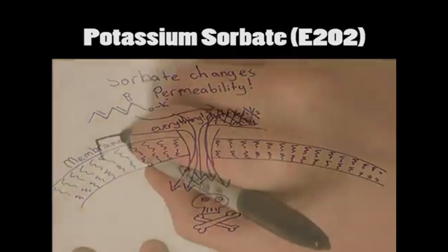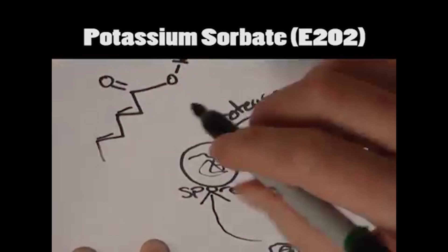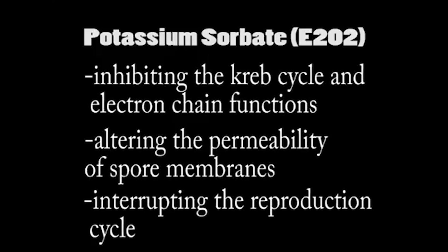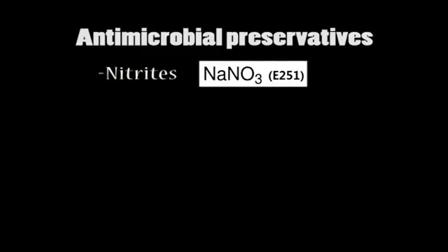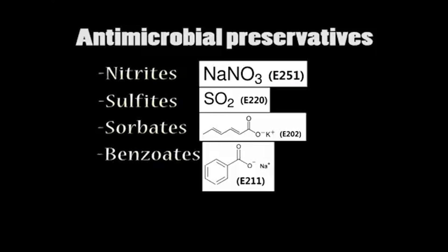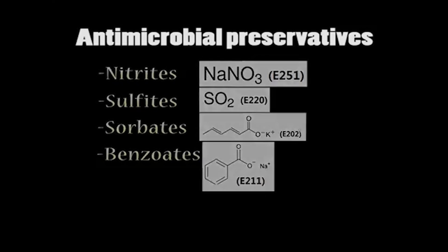In addition, sorbate inhibits protease enzymes which are essential for the spore's germination. These mechanisms in turn cease the growth of moulds, yeast and bacteria. Although this is just one antimicrobial preservative, there are a variety of preservatives that inhibit the growth of microorganisms in different ways, and often these are used in conjunction with one another to eliminate or minimise risk of microbial spoilage.